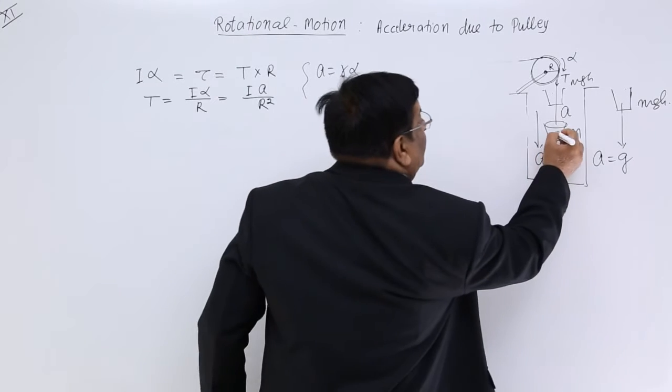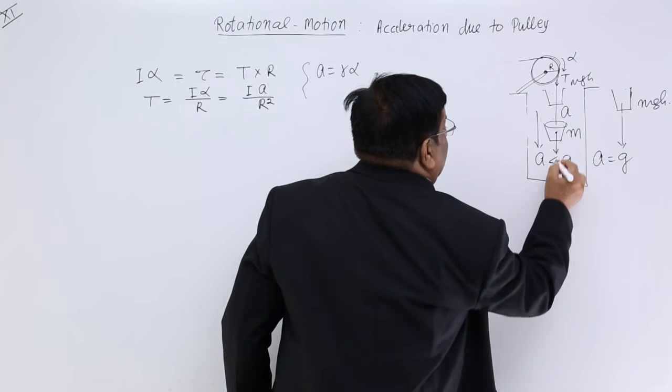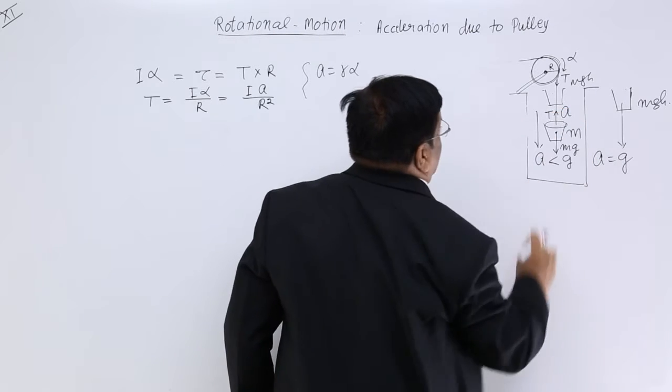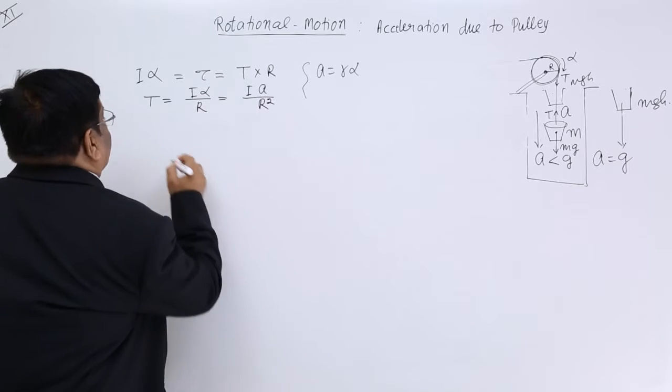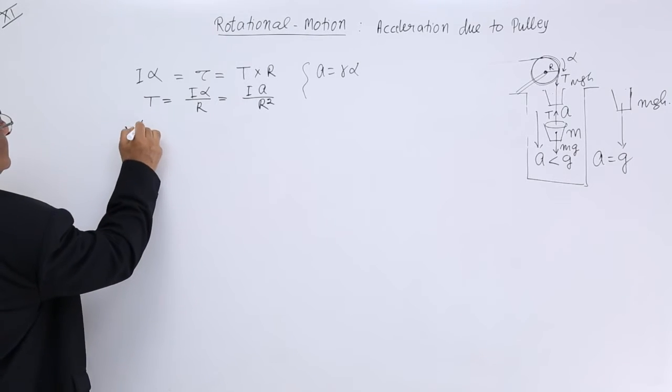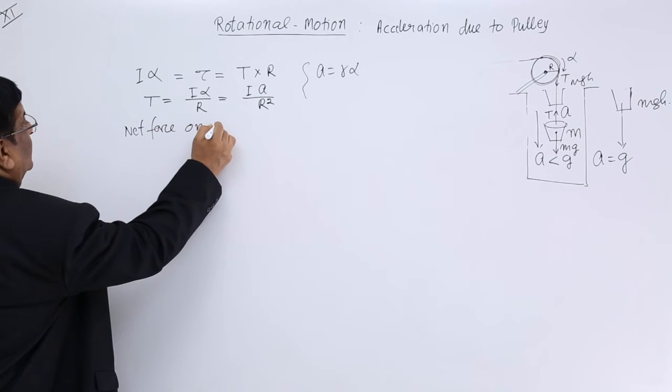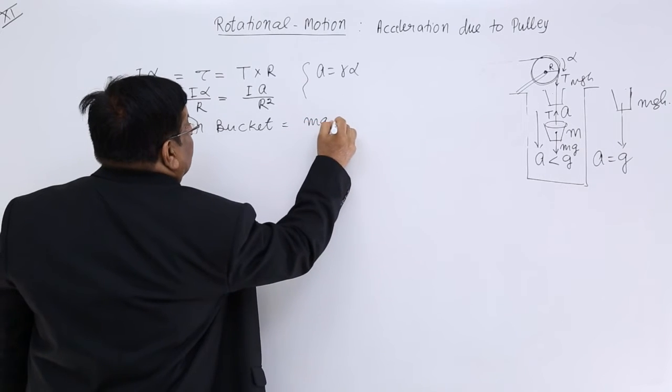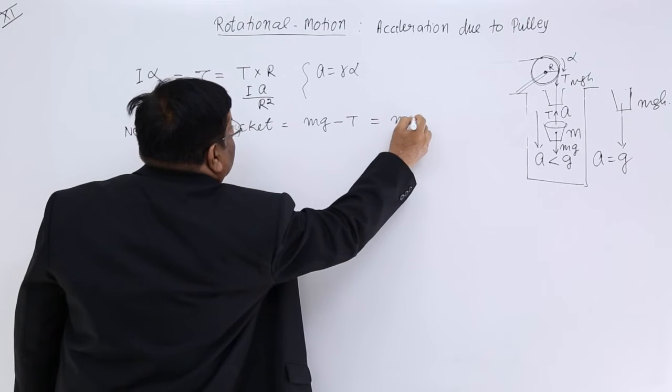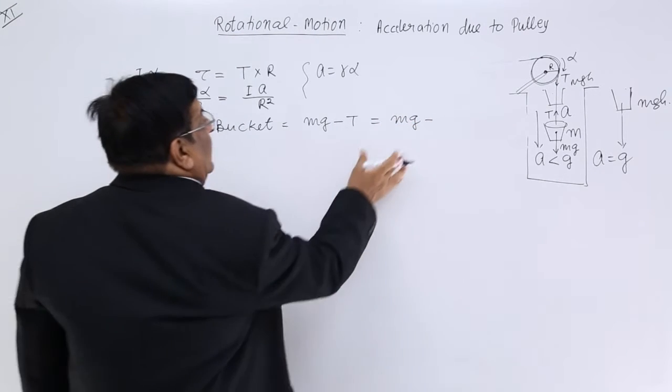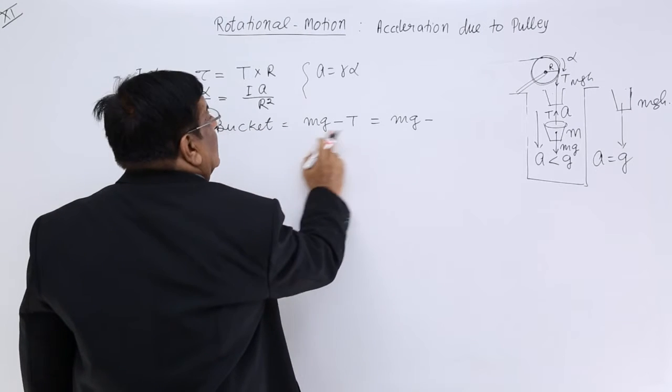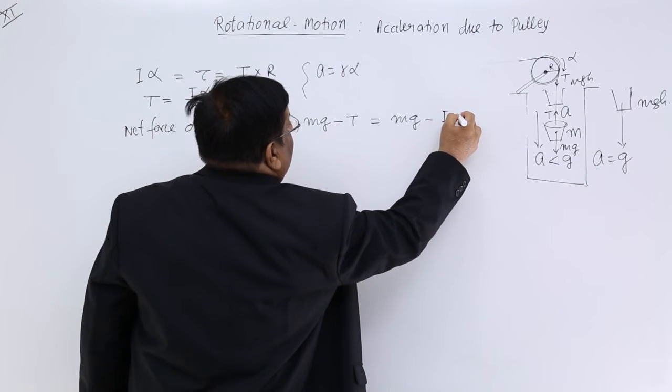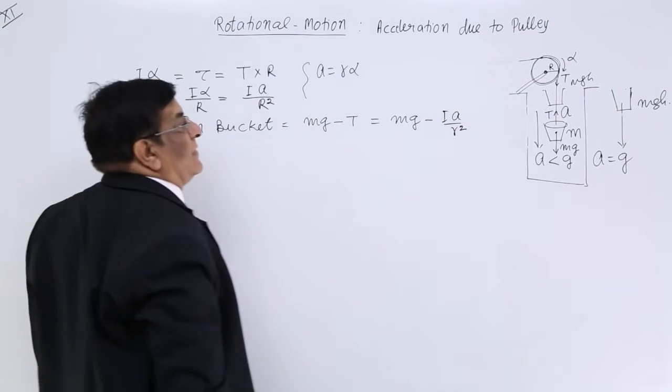Now make a free body diagram here. The force which is acting downward is mg. The force which is acting upward is tension. So what is the net force? The net force on bucket is equal to mg minus T. This is mg minus T. T is equal to I a upon r square.